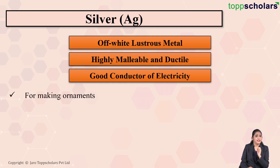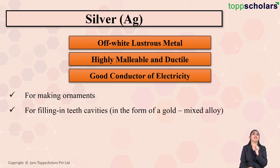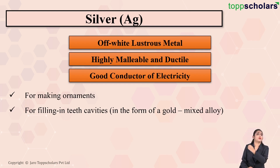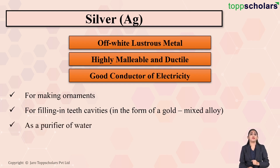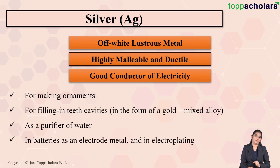Because of these properties, silver is used on a large scale. Silver is used for making ornaments. Silver is used in dentistry to fill teeth cavities, generally mixed with gold in the form of an alloy. Silver is also used as a purifier of water, as an electrode metal in batteries, in electroplating, and in photography in the form of silver bromide and silver iodide.